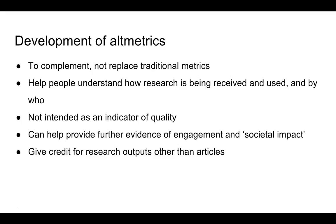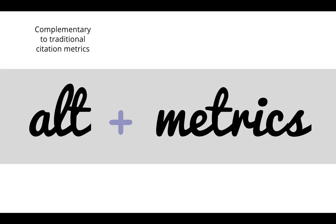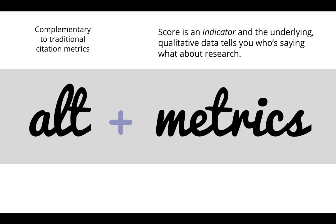Altmetrics aims to measure things other than journals. They are based on article level metrics as opposed to the traditional model, which is often journal level metrics. Altmetrics can look at things like data sets, posters, and presentations, giving us data on how these are being shared and communicated. They are complementary to citation metrics — the score is an indicator and the underlying qualitative data tells you who's saying what about your research.